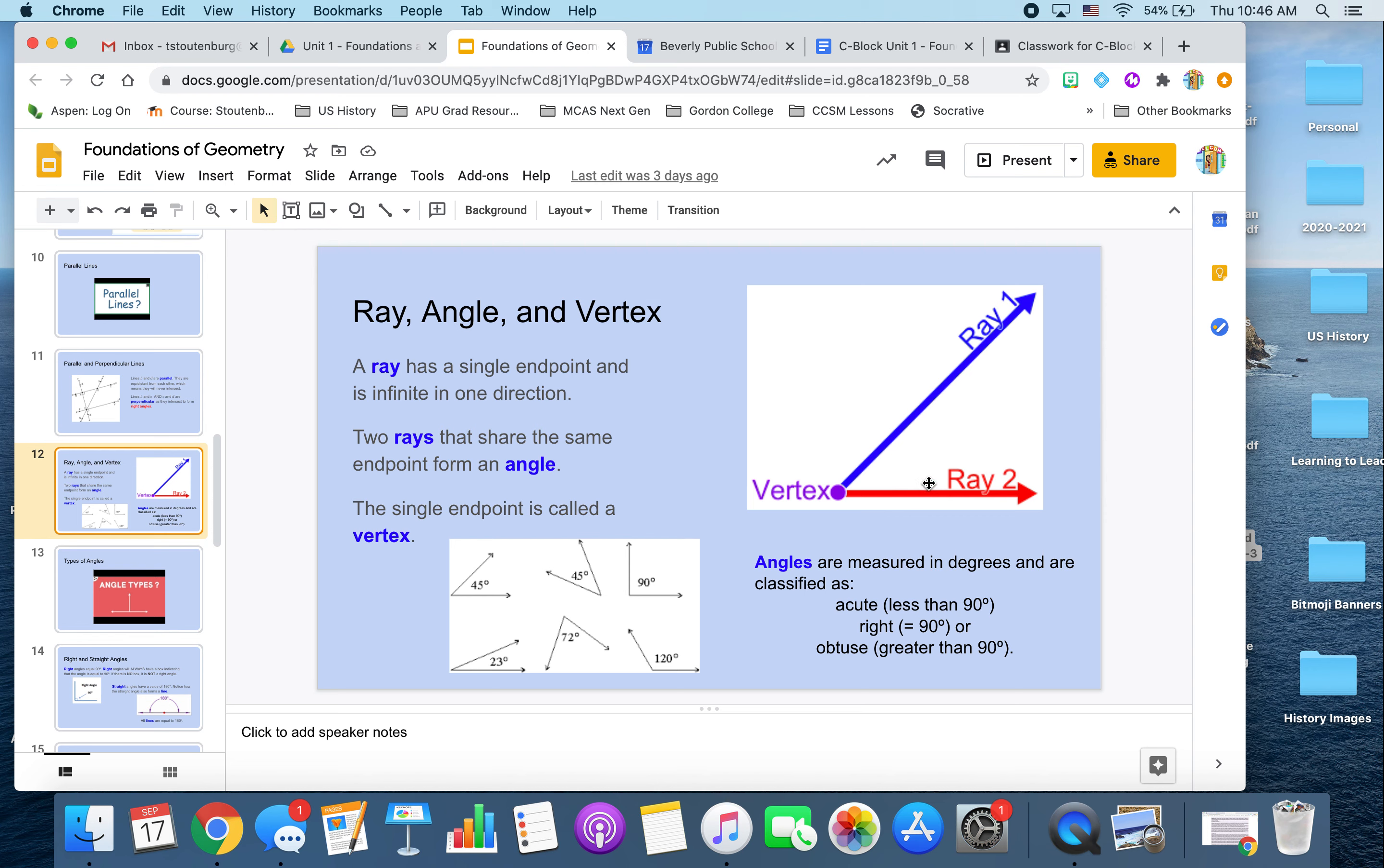And I'm sure you remember from middle school that we have three primary types of angles. We have acute angles, which are considered less than 90 degrees, right angles, which of course equal 90 degrees, and then obtuse angles that are greater than 90 degrees. And you can see here from these examples, you have one, two, three, actually four acute angles, one right angle, and one obtuse angle.